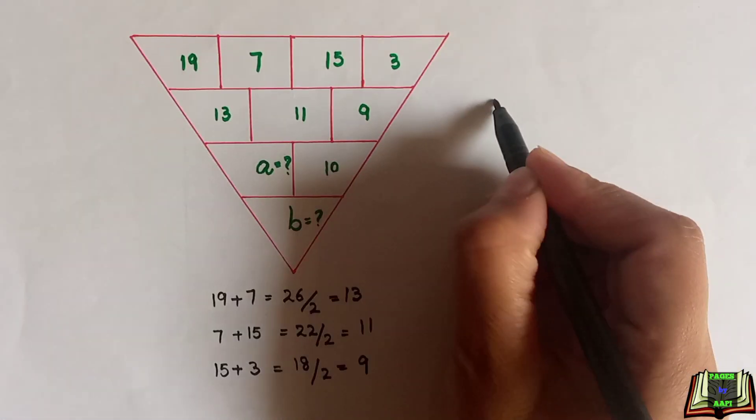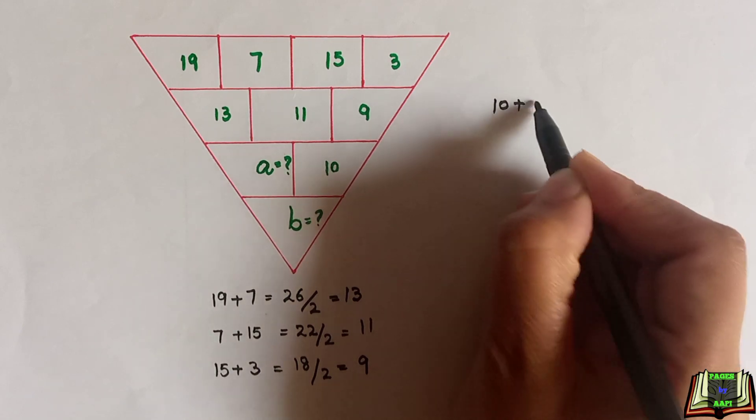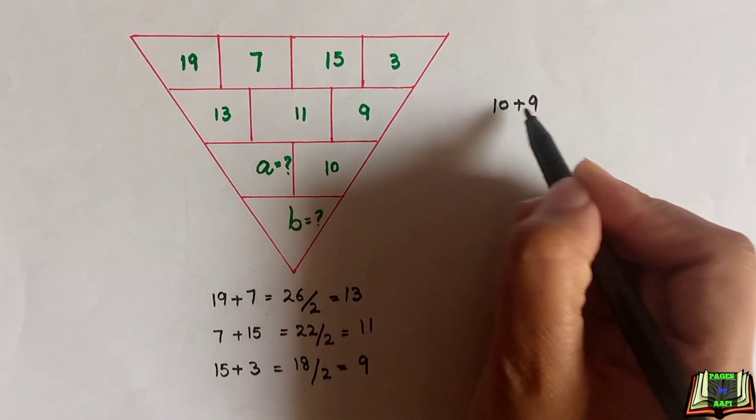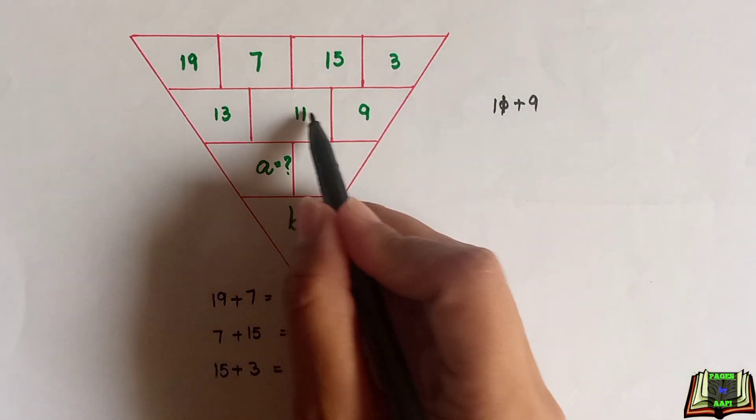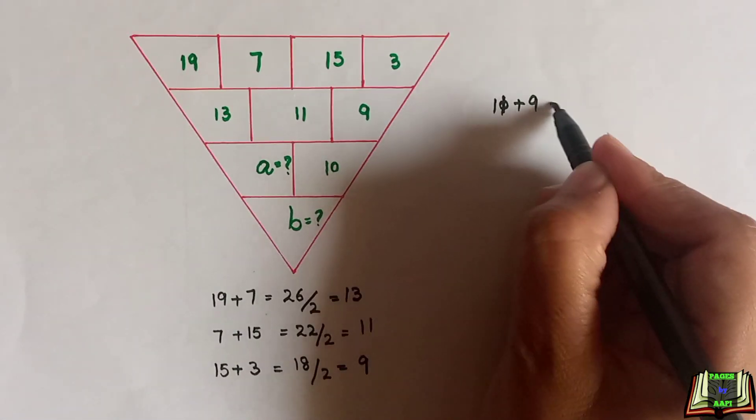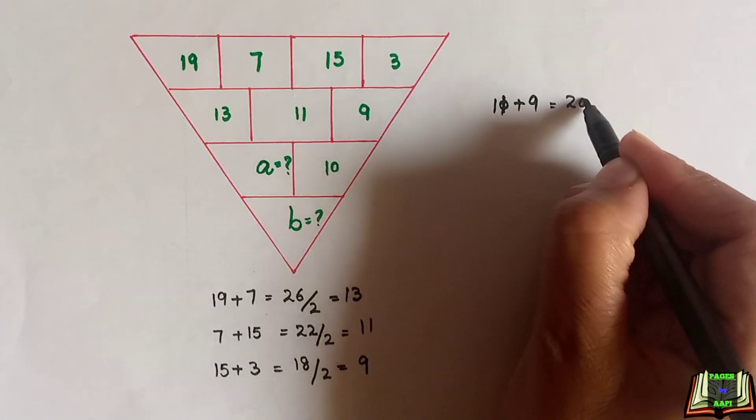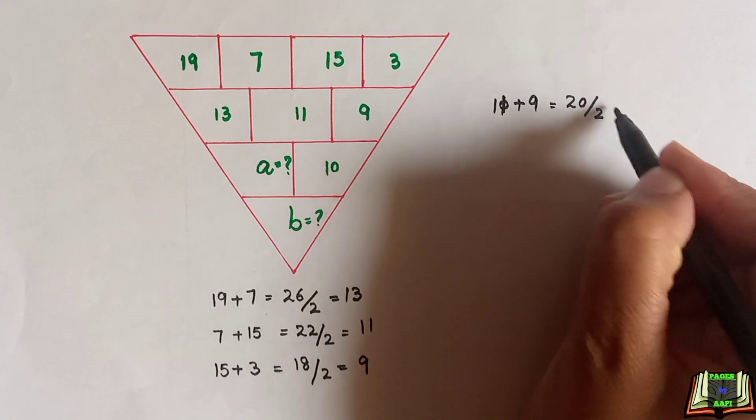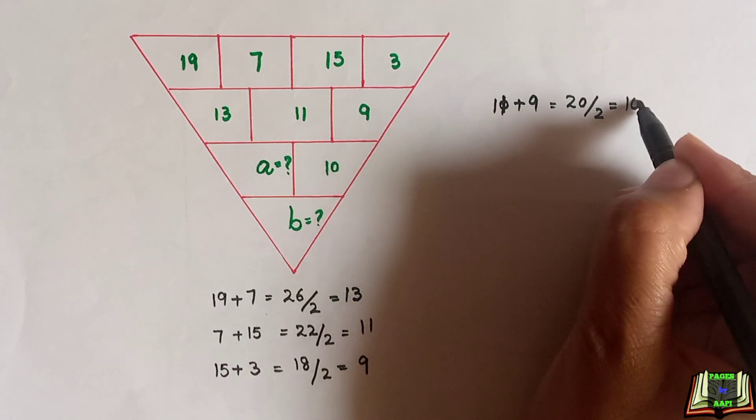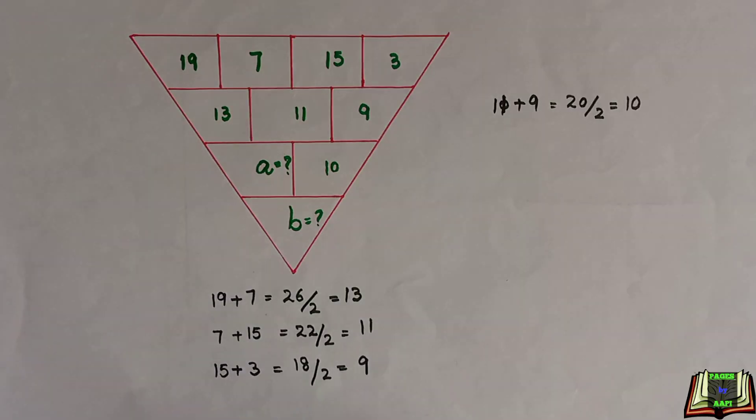Now we will add the next two numbers - sorry, 11 and 9. We add these two numbers. This equals 20, and then we divide it by 2, which equals 10. We got this 10 number.